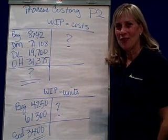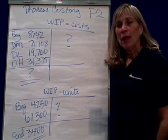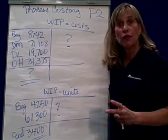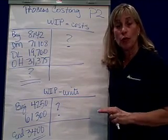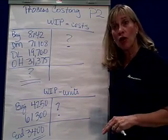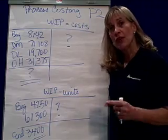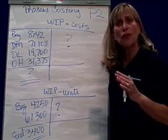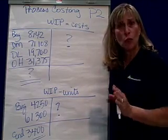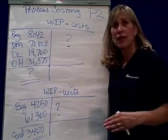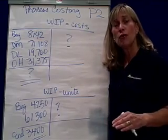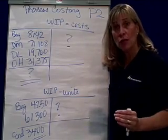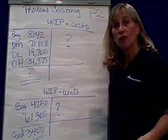Managerial accounting, process costing. We're going to be doing two different types of production reports, or process cost reports, and these are both detailed in your text. Businesses will decide which approach they take — they'll either do FIFO, which is first in, first out, or they'll do average costing.